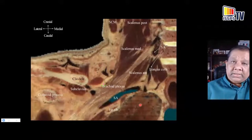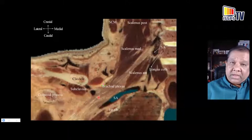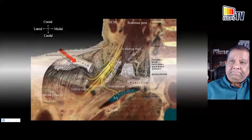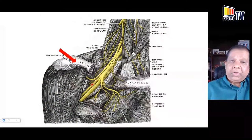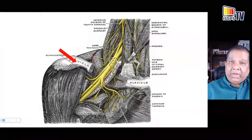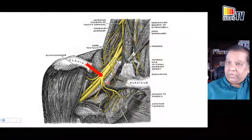In cadaver dissection images from the National Medical Library's Visible Human server, you can see the cords located lateral to the artery and how they are arranged posterior and deep to the clavicle in relation to the serratus magnus muscle in the costoclavicular space. Number five represents the posterior cord, six the lateral cord, and seven the medial cord — an arrangement you will see consistently from patient to patient.